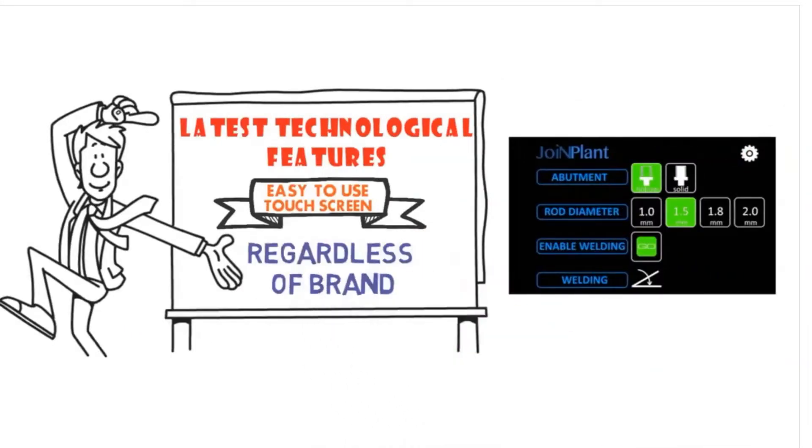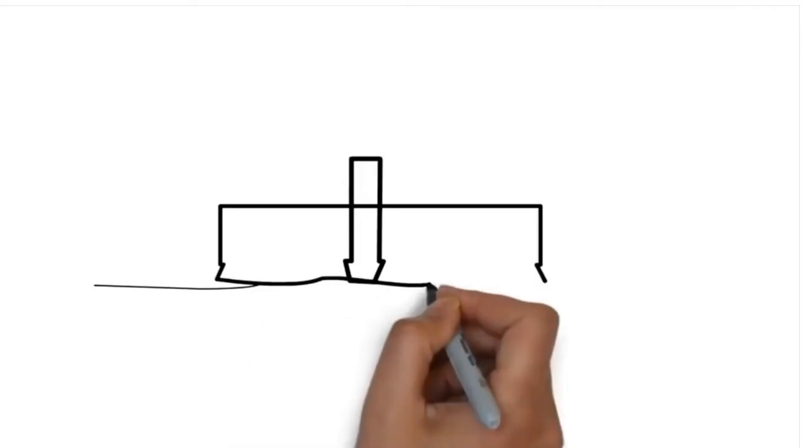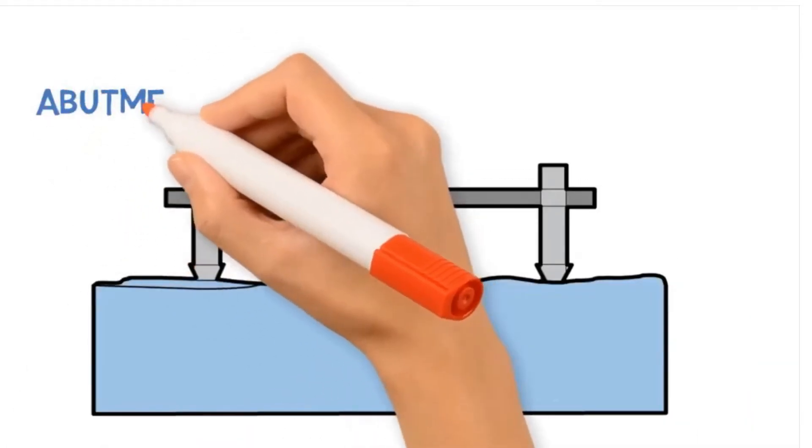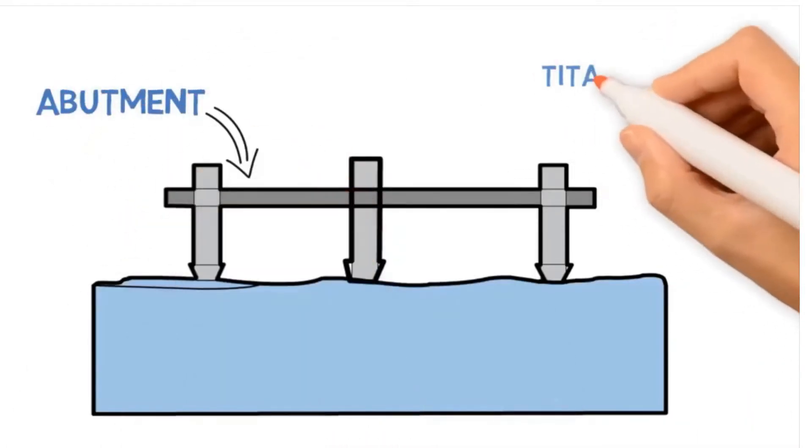Joinplant is an extraordinary machine based on resistant spot welding principle, capable of connecting permanently a titanium bar to the abutment.